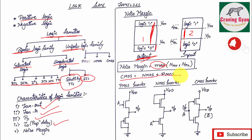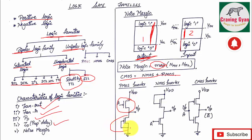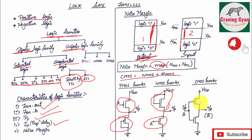CMOS is made up of NMOS transistors as well as PMOS transistors. The pull-down network is realized using NMOS transistors and the pull-up network is realized using PMOS transistors. In a PMOS inverter, the pull-up network stays unchanged and the pull-down network is short-circuited with some resistance. In an NMOS inverter, the entire pull-up network is replaced by a single depletion-mode NMOS transistor. In CMOS, PMOS is placed in the pull-up network and NMOS in the pull-down network, because PMOS passes strong logic 1 and NMOS passes strong logic 0.